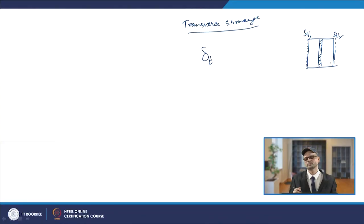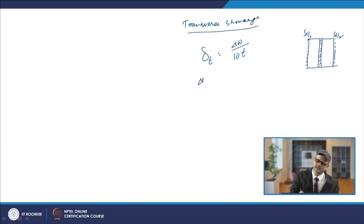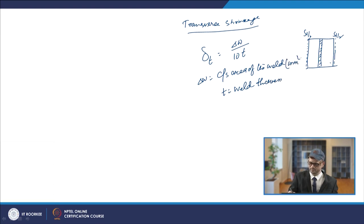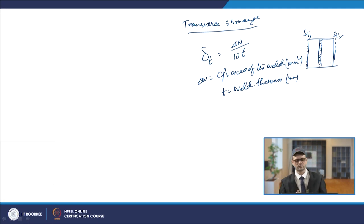Transverse shrinkage can be predicted by the formula: ΔT = ΔW / (10 × T), where ΔW is the cross-sectional area of the weld in mm², and T is the weld thickness in mm.